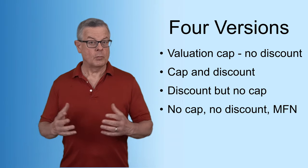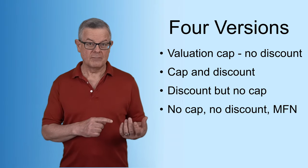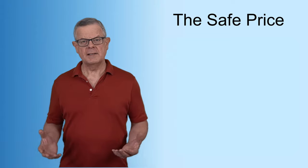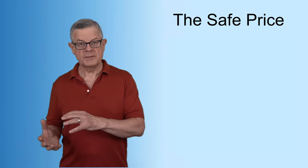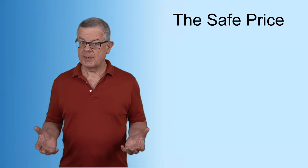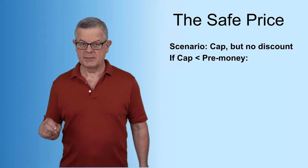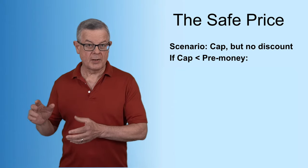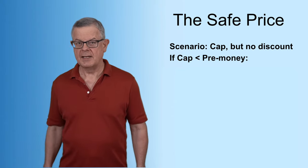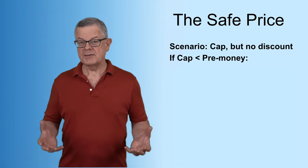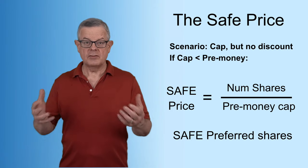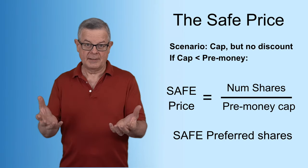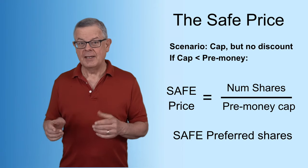In terms of caps and discounts, we did talk about those in the context of the convertible note — you might check out that video for an overview. So what exactly does the SAFE money pay for stock when it converts into ownership? It depends on the scenario. Let's consider the scenario where there's a cap but no discount. If the cap is less than the pre-money value of that future round, then the cap is going to kick in and determine the price paid by the SAFE investor. The price is the total fully diluted shares — the number of shares being issued to the new investors plus all of the options allocated and awarded — divided by the pre-money cap.